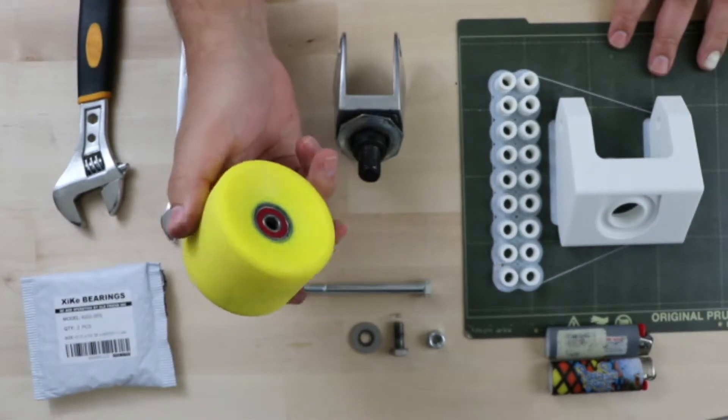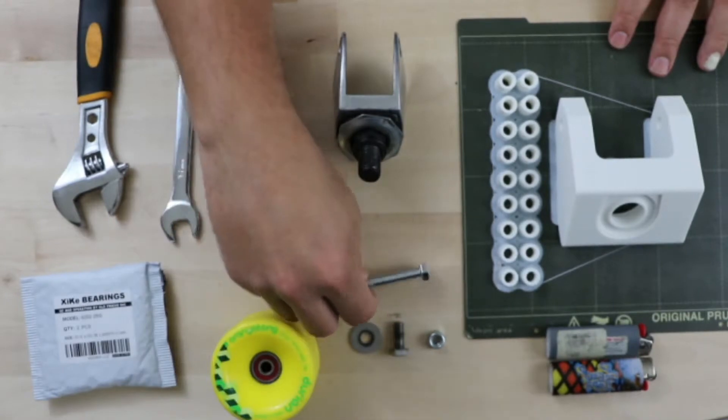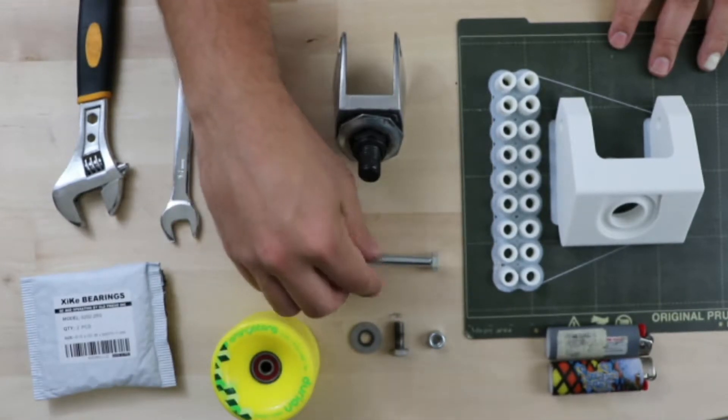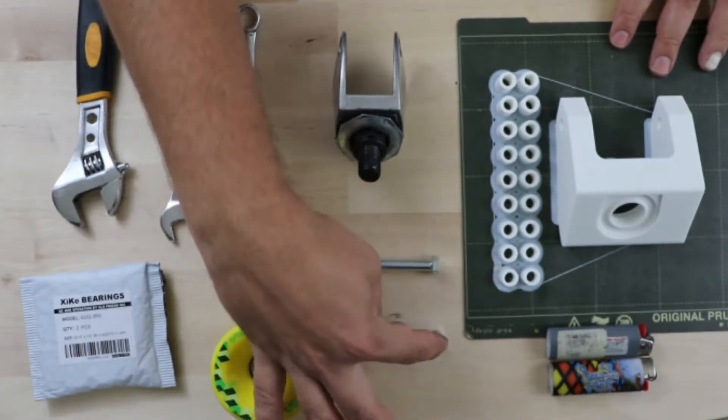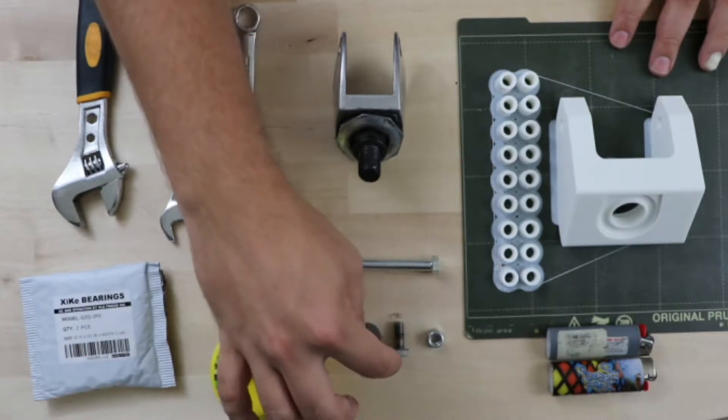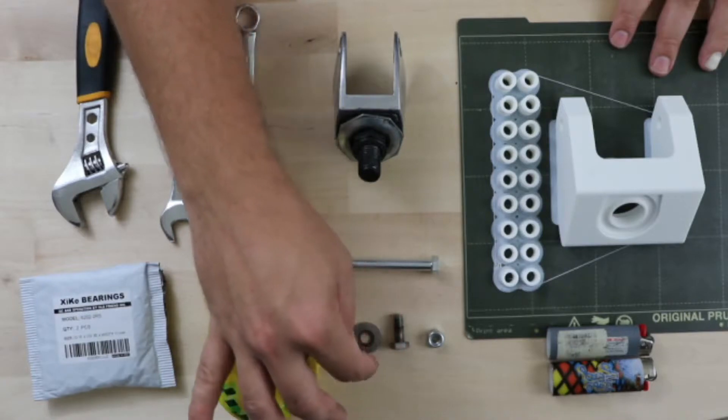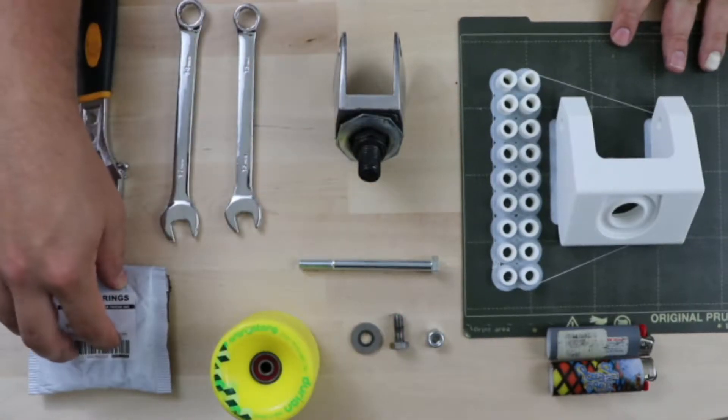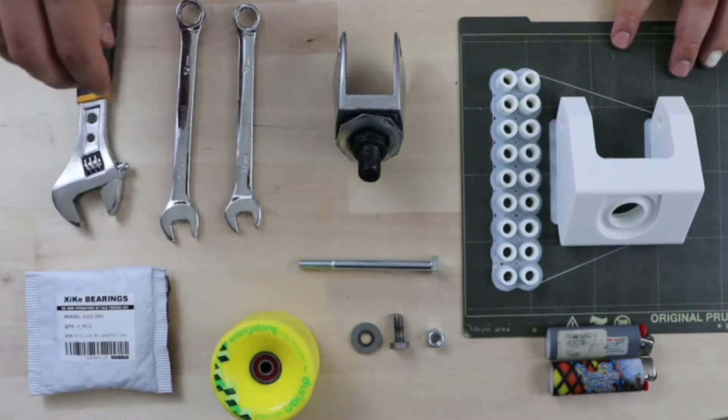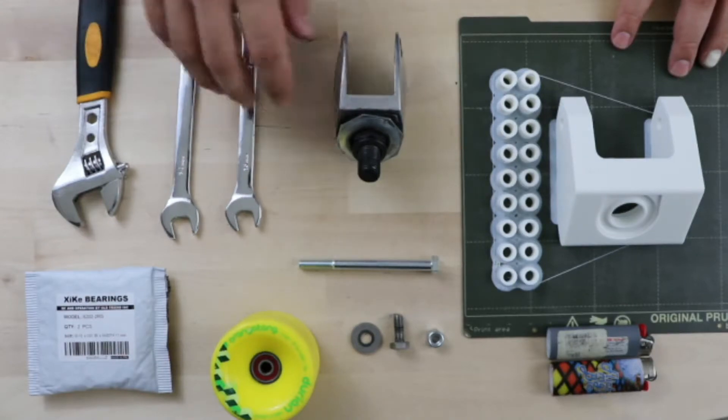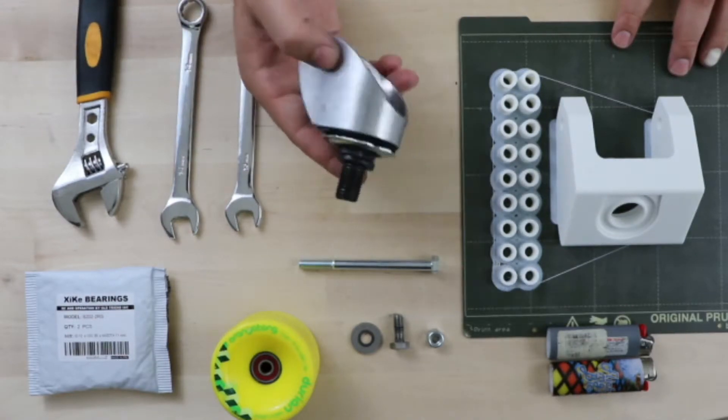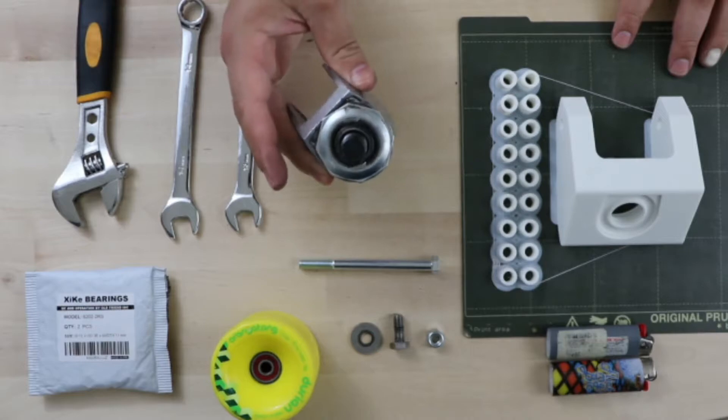Then we've got our bolt, eight millimeters by 100, we've got an eight millimeter lock nut, and we've got an eight millimeter by 20 washer, inner bearing that goes inside. I got an adjustable, two wrenches, and the old piece of junk wheel that comes with the crazy cart and we're going to be using a few parts from here.